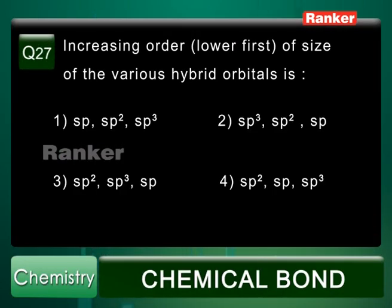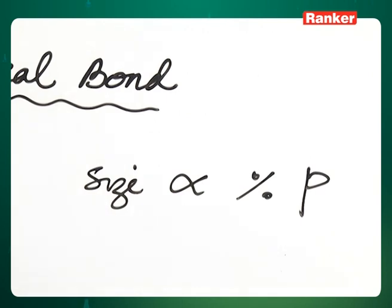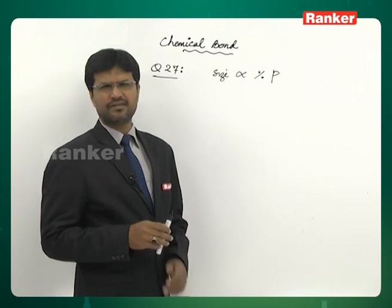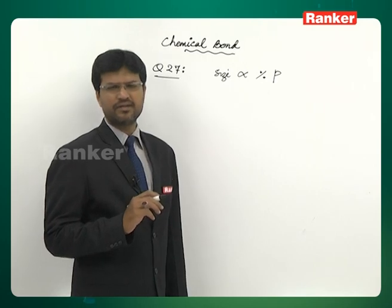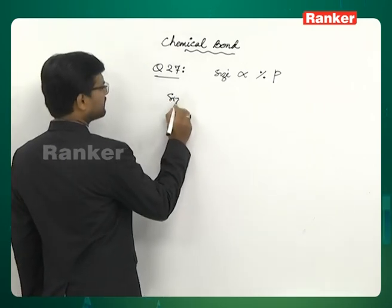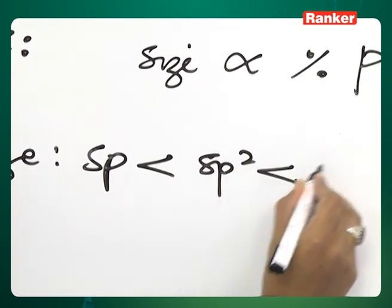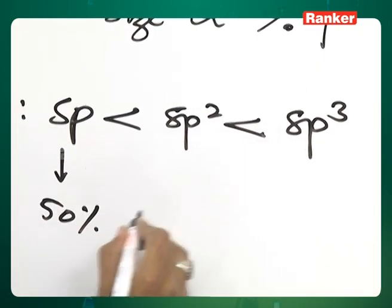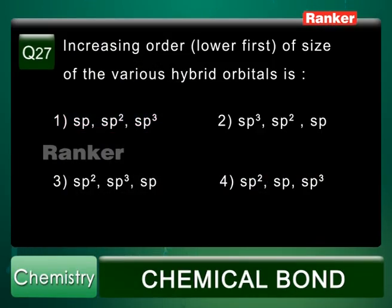Question number 27: Increasing order of size of the various hybrid orbitals. Size is proportional to %p character, or inversely proportional to %s character. As %s character increases, size decreases. Highest %s character is in sp (50% s), then sp2 (33% s), then sp3 (25% s). So the order of size is sp < sp2 < sp3. The correct answer is the first option.